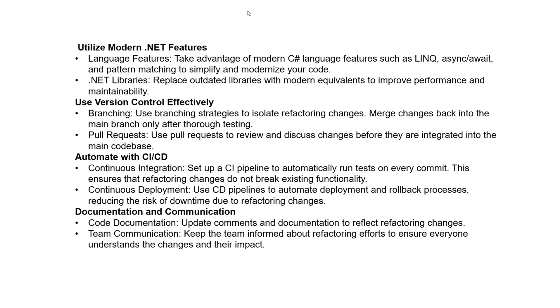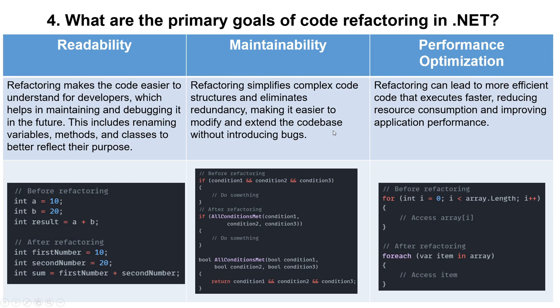The next question is: what are the primary goals of code refactoring in .NET? The first goal is readability — refactoring makes code easier to understand for developers, which helps in maintaining and debugging it in the future. This includes renaming variables, methods, and classes to better reflect their purpose. For example, before refactoring you might have `int a = 10` and `b = 20`, which are hard to understand. After refactoring, you use meaningful names like `firstNumber` and `secondNumber` if you want to calculate a sum.